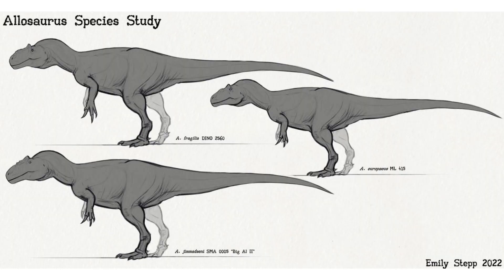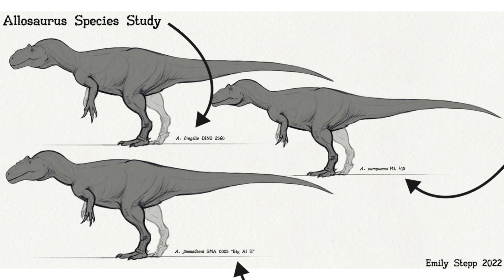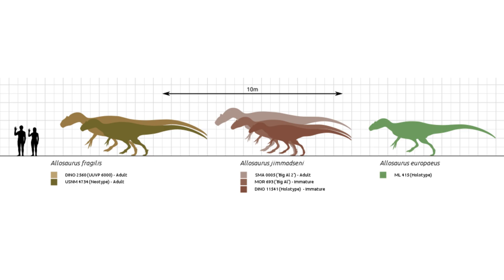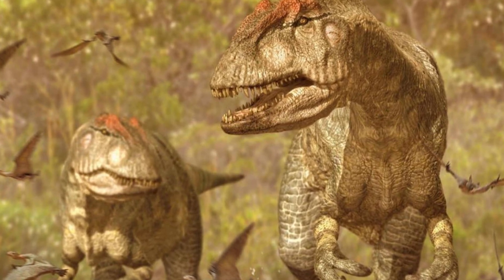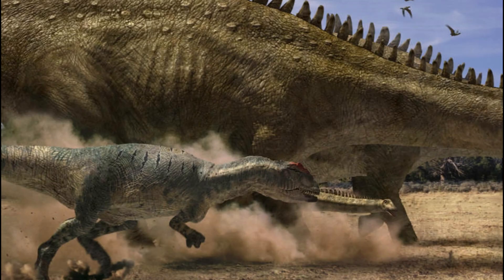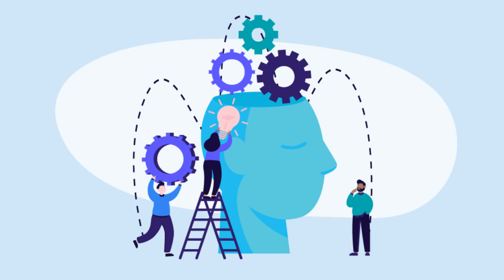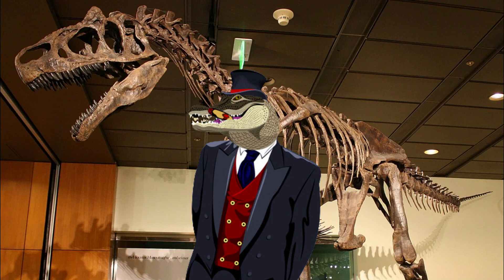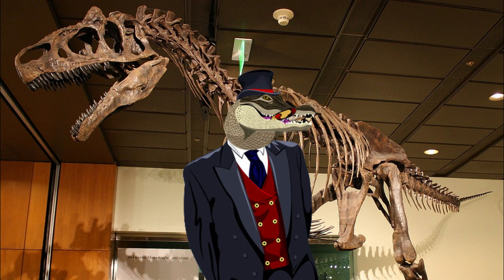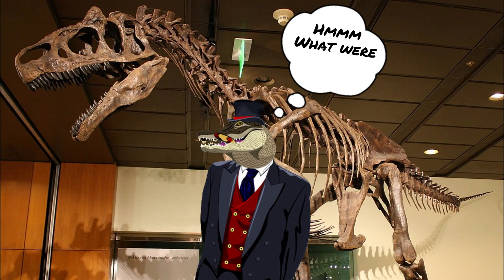Some of the most notable species of the Allosaurus genus include Allosaurus fragilis, Allosaurus europaeus, and Allosaurus jimmadseni. Over time, Allosaurus species adapted to different ecological niches and environmental conditions. They were likely apex predators in their ecosystem, preying on herbivorous dinosaurs including sauropods and ornithopods. Our understanding of these dinosaurs is continually evolving as new discoveries are made — I'd always recommend consulting your closest museum for the most up-to-date information.